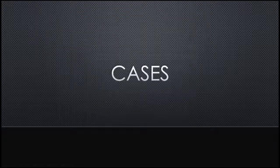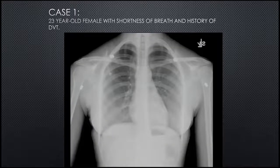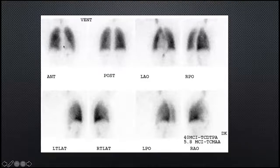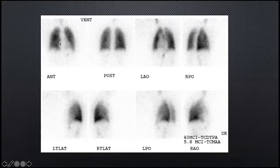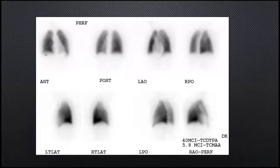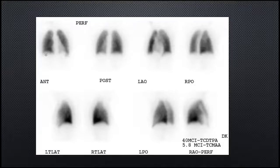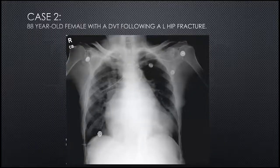Case 1: a 23-year-old female with shortness of breath and history of DVT. We see a normal chest x-ray and a ventilation performed with DTPA — some activity in the trachea and GI tract, which is perfectly normal. We have nice crisp borders on the ventilation scan with the expected cardiac shadow. Her perfusion is likewise normal, with the cardiac shadow visible and everything else looking beautiful — a normal VQ scan.